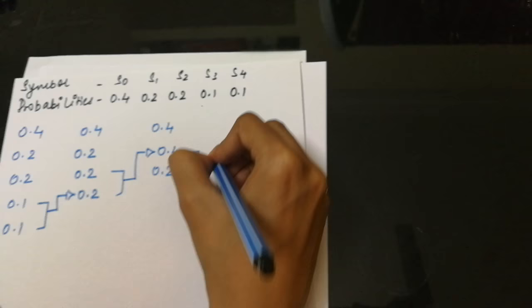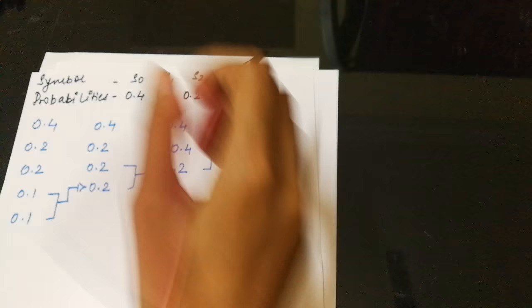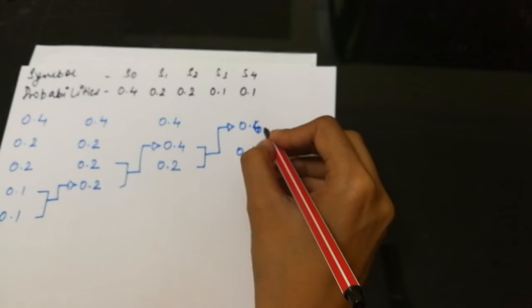Now we start by giving the binaries to these two. This would become 0 and 1. Now 0.6 is the result of 0.4 and 0.2, we have 0. This 0 would be listed here.